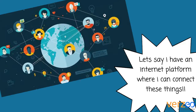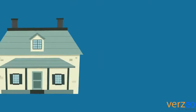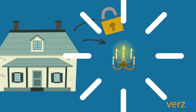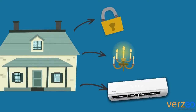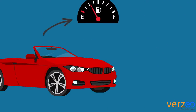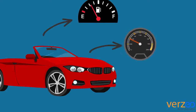Let's take the example of my house. I can connect my locks, my lighting, and even my AC. Since I have a platform, I can also connect my car to this — I can keep track of my fuel meter, my speed limit, and also the location of my car.